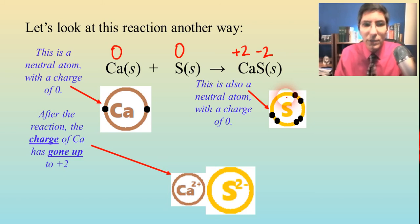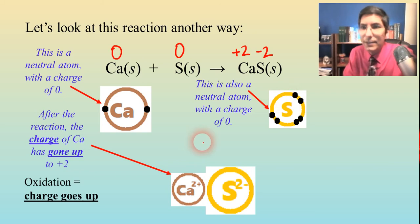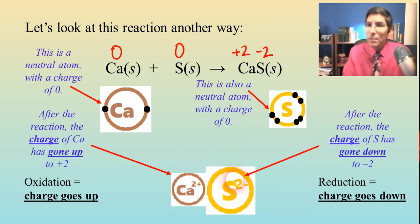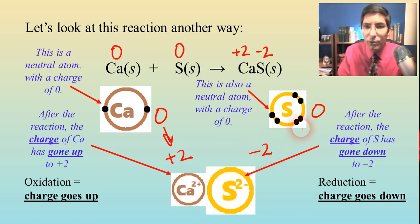So when the charge of something goes up, we say that it's oxidized. That's another way to think about oxidation. And when the charge of something goes down, we call that reduction. So for some students, that makes more sense. When the charge goes from, as you can see here, zero to plus two, charge going up is oxidation. We went from zero to minus two. Charge going down is reduction.